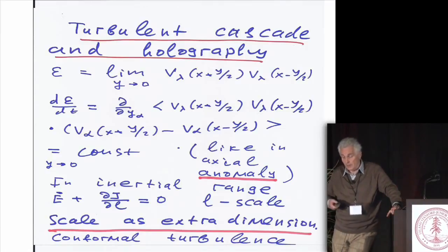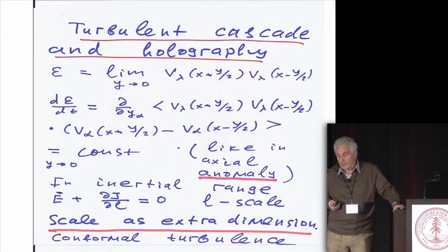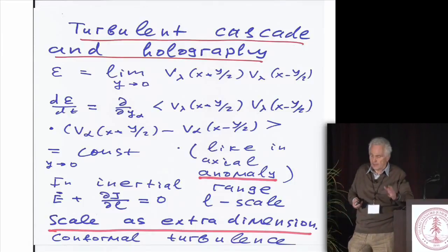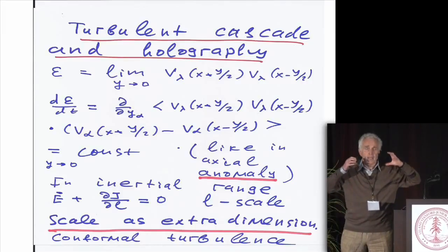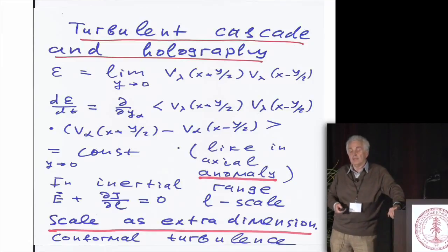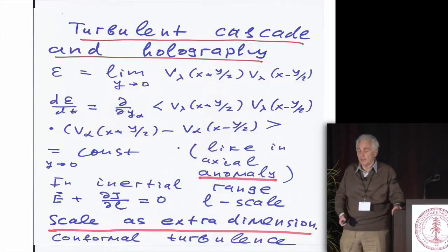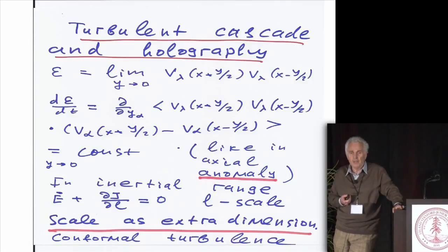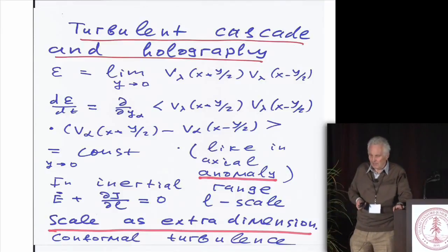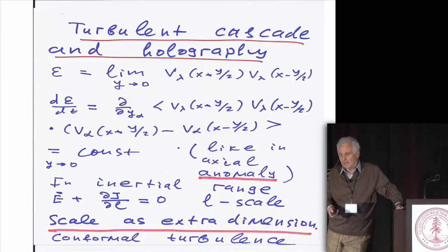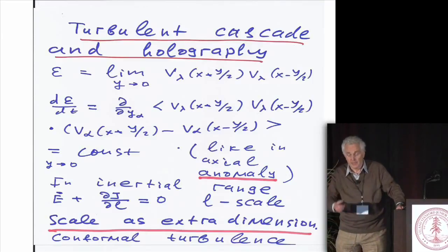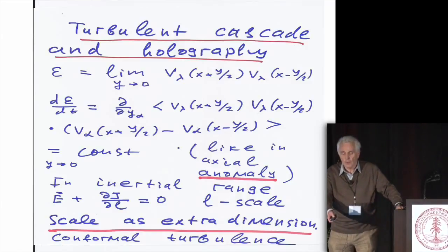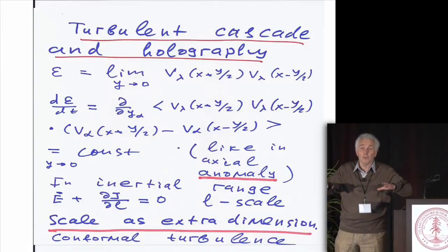And it is possible that some progress can be achieved in finding the turbulent state which, contrary to the Gibbs state, in turbulence we have not average, not say energy fixed, but flux of energy fixed. These flux states may be possible to describe by introducing the extra dimension in the holographic spirit, which I don't like but use sometime. In any case, probably the scale which enters in the Kalmogorov picture could be interpreted as an extra dimension.